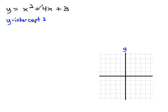0 squared is 0, plus 4 times 0 is 0. All that's left is the 3. The y-intercept is always going to be this last value, y equals 3 in this case. So on the y-axis, we put the point 3.